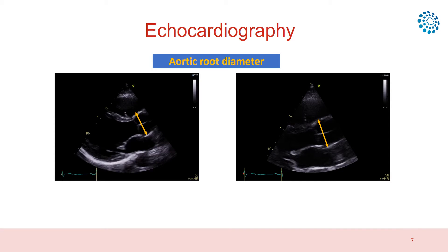After the acquisition of the echo, measurement of the size of the aorta can be obtained at different levels. In the follow-up of patients, aortic diameter is crucial to determine the time to indicate prophylactic surgery.